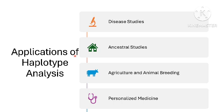Coming to the applications of haplotype analysis — one of the primary uses is in the identification of genetic variants associated with complex diseases. Many diseases such as diabetes, cardiovascular disease, and certain cancers are influenced by multiple genes that interact in complex ways. Haplotype analysis allows researchers to examine the combination of genetic variants across several loci to better understand disease risk, and can help pinpoint genetic regions that may harbor disease-causing mutations.